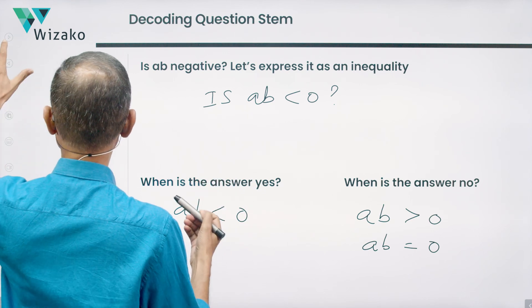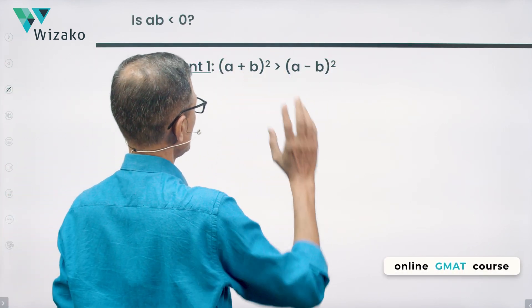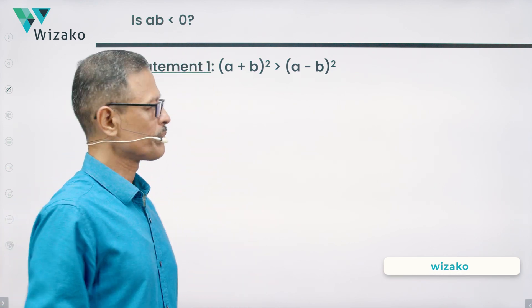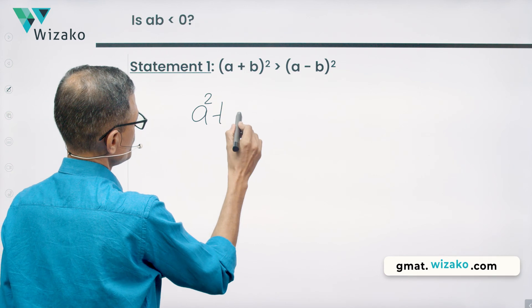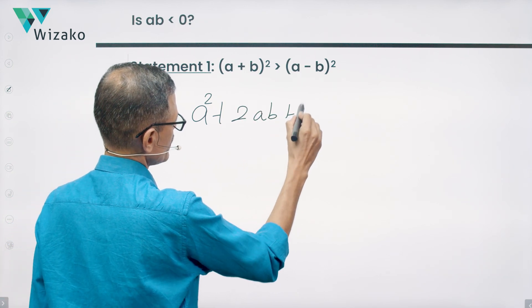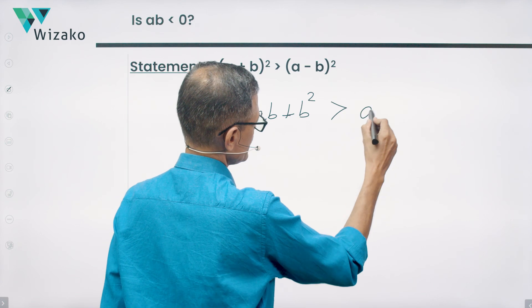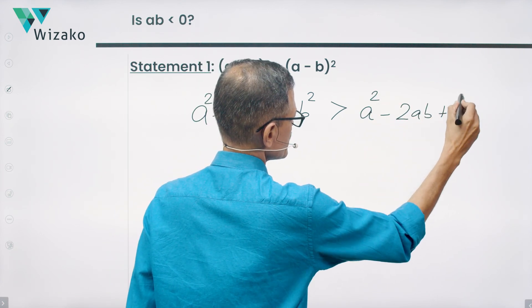Let's quickly look at statement one, which is the next step in our processing of the DS question. (a + b)² is greater than (a - b)². The question is, is AB negative? Let's expand this and see what we get. a² + 2ab + b², this is the left hand side, is greater than a² - 2ab + b².